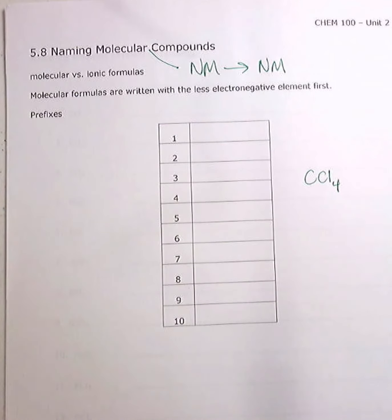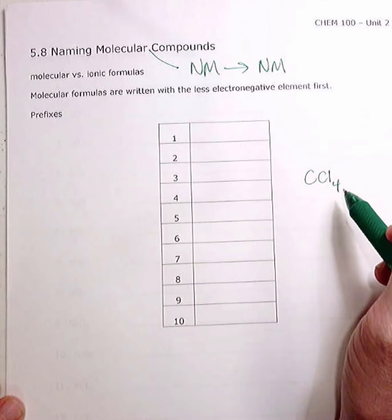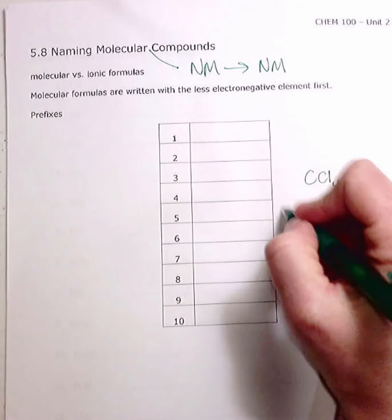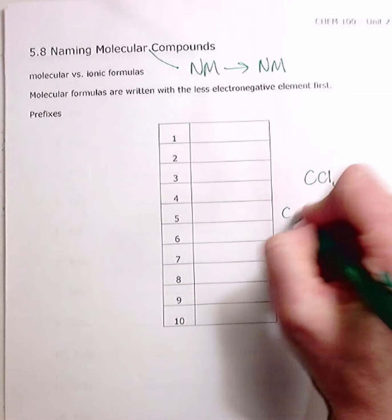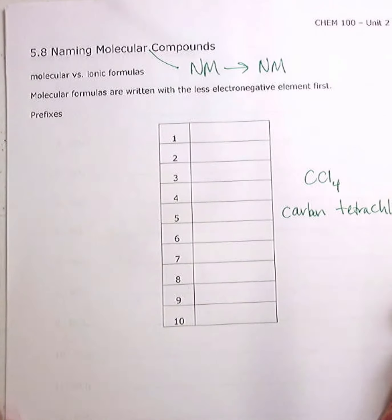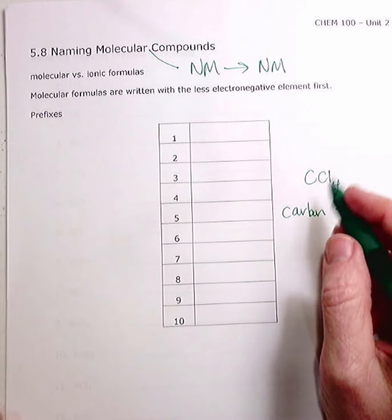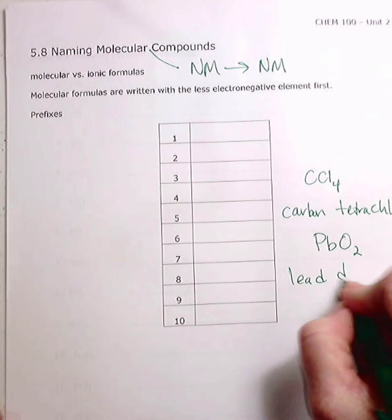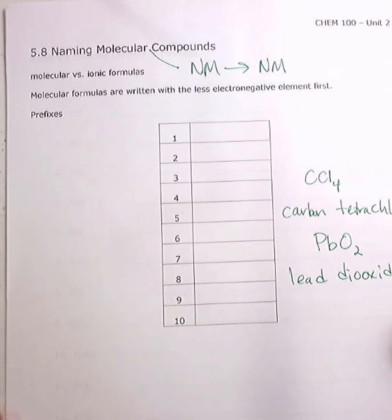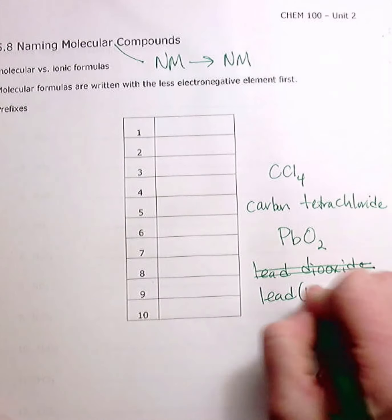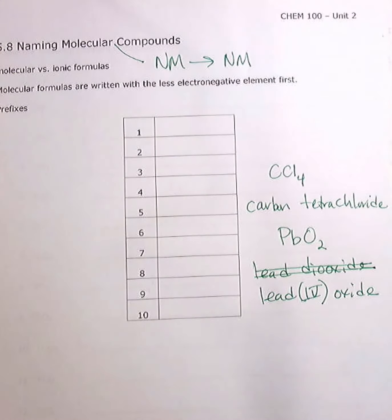So what inevitably happens is students will say, oh, this is the one where I get to use prefixes. Usually students like naming covalent compounds better. It's a lot easier than ionic compounds, but I caution you. Watch, I'll show you what happens. So this is carbon tetrachloride. And then students will get something like this. I'll get PbO2 and they'll say lead dioxide. It's incorrect. That is incorrect. This is lead four oxide. And if you're not sure where I got lead four, see the previous page, page 18.